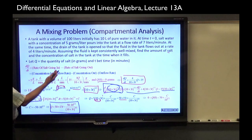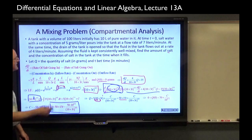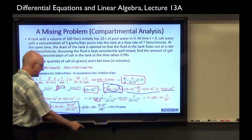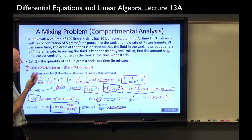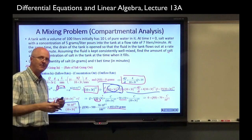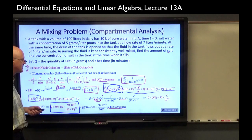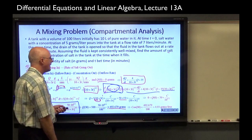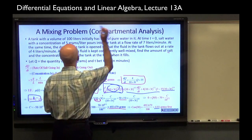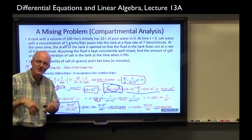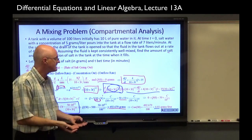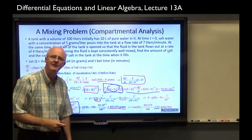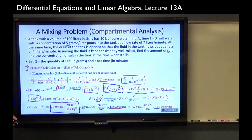Now use the solution to answer the problem. Plug in t = 30 to find the amount of salt. It turns out to be approximately 492.679 grams. The concentration is that divided by 100 liters — about 4.93 grams per liter right when the tank fills up. That makes sense: it's close to 5 grams per liter, the concentration going in, but we started with zero salt, so being just under 5 after 30 minutes is reasonable.